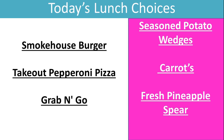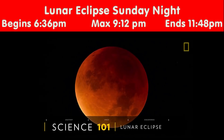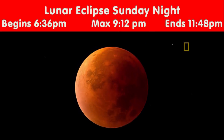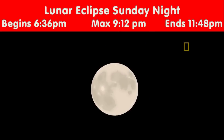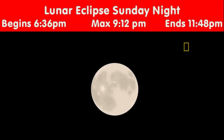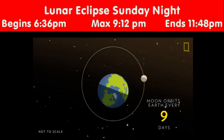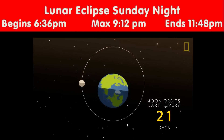A lunar eclipse happens when the Earth blocks some or all of the Sun's direct light from reaching the Moon. This cosmic event only takes place during a full Moon, which happens once every 29 and a half days, or the length of one full orbit of the Moon around the Earth.